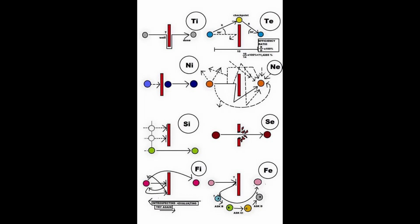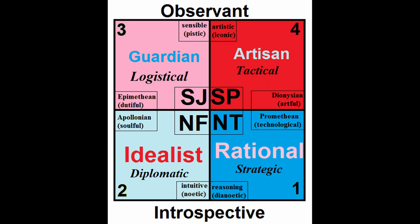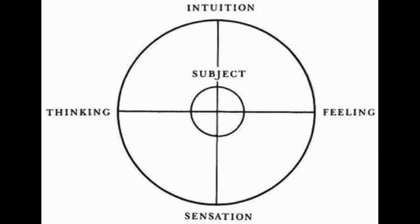You can break that down further into the combination of the four main temperaments written about by Keirsey, based on Plato. Those main temperaments can be broken down into the four Jungian functions: intuition, feeling, thinking, and sensation. Most people would stop there, but I'd argue you can keep going.